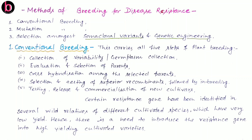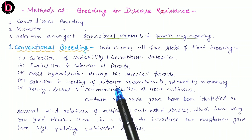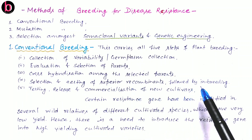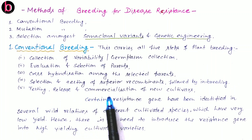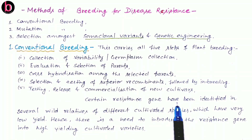Fourth is selection and testing of superior recombinants, followed by inbreeding. When the desired hybrid is obtained, we further select and test, then continue inbreeding to obtain a pure line or homozygous breed. Fifth and last is testing, release, and commercialization of new cultivars — performed in the laboratory, then in scientific research areas, then in open fields for at least three growing seasons, after which the crop is ready to be commercialized.